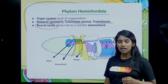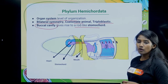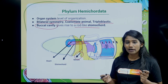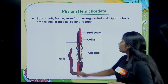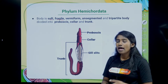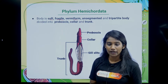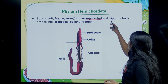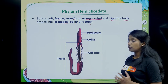In Hemichordata, you will notice a buccal cavity which gives rise to a rod-like stomochord. The body is very soft and fragile — worm-like in appearance, so it is called vermiform and fragile. The body is unsegmented and tripartite, meaning the entire body is divided into proboscis, collar, and trunk.